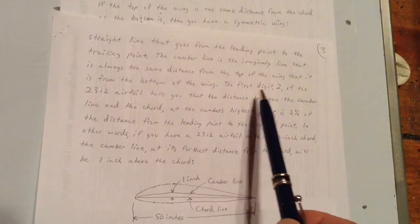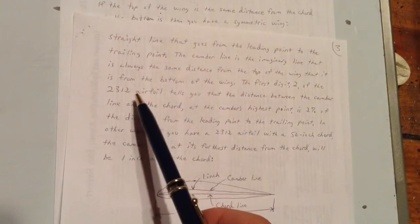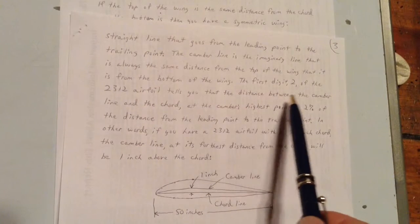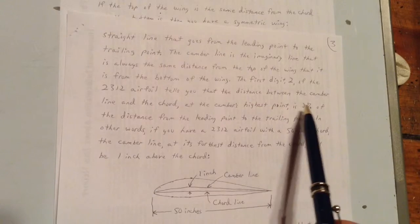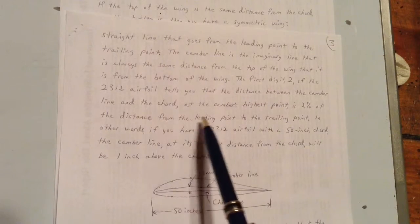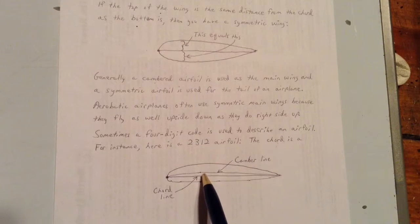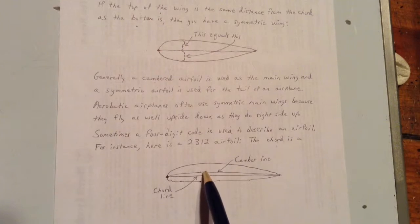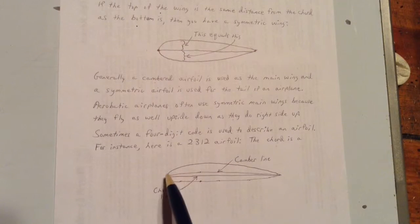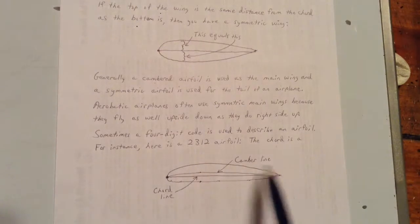The first digit, 2, of the 2-3-1-2 airfoil, tells you that the distance between the camber line and the cord at the camber's highest point is 2% of the distance from the leading point to the trailing point. See there? That distance there between the camber line and the cord line, that little teeny distance, that's 2% of this distance from the leading point to the trailing point of the cord line.